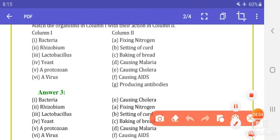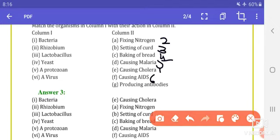Then we have matching column 1 and column 2. Bacteria causes cholera. Rhizobium fixes nitrogen. Lactobacillus does curd setting. Yeast bakes bread. Protozoa causes malaria. And virus causes AIDS. So one option is the extra option that doesn't match with anything.